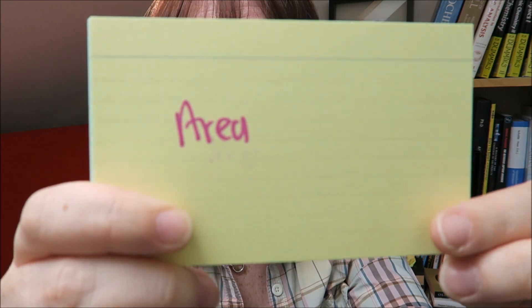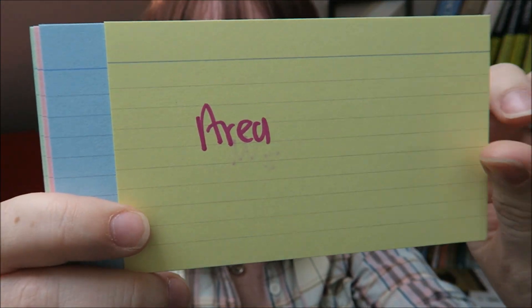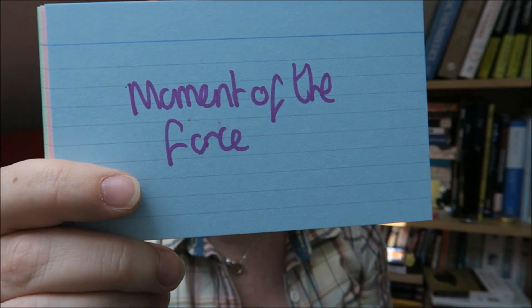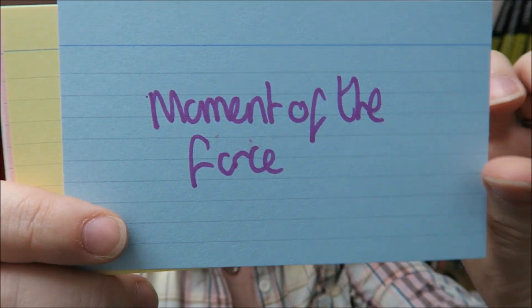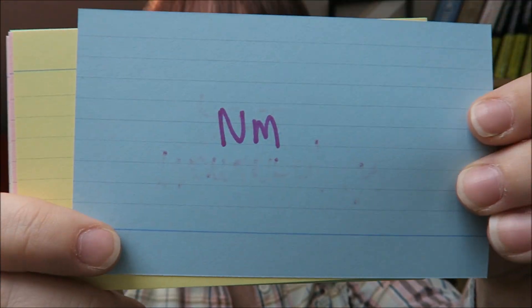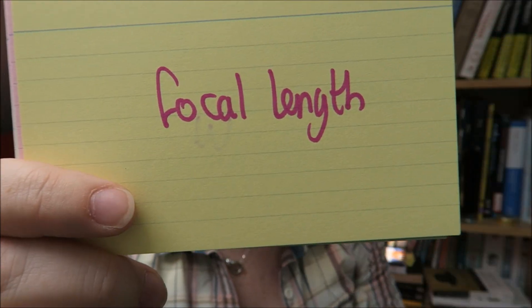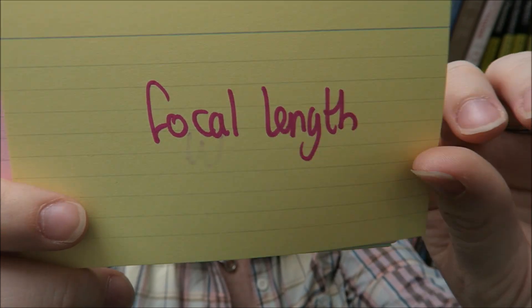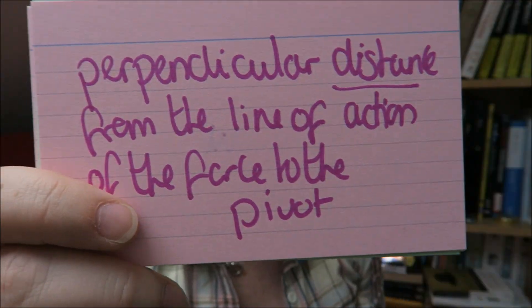What does that say? Oh — area. What is area measured in? Metre squared. Moment of the force — Newton metres. Focal length — this is measured in metres.